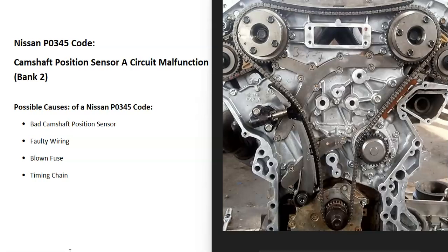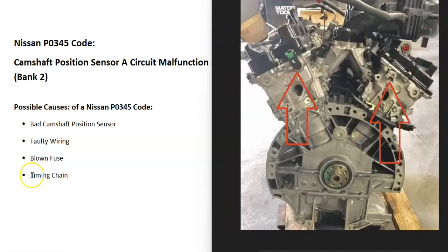But if you are only getting a P0345 code, then very likely it's not a timing chain. It's just either a bad camshaft position sensor or something going on in the wiring.